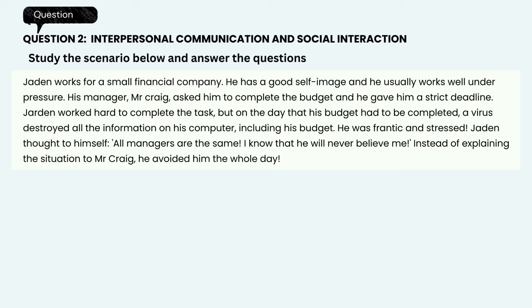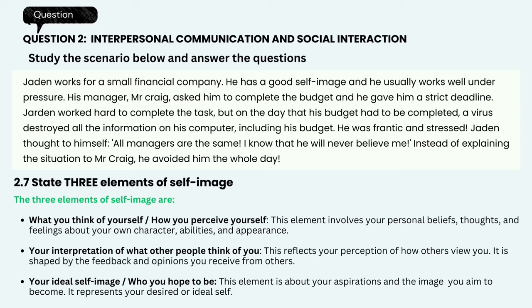State three elements of self-image. The three elements of self-image are: 1. What you think of yourself and how you perceive yourself — this element involves your personal beliefs, thoughts, and feelings about your own character, abilities, and appearance. 2. Your interpretation of what other people think of you — this reflects your perception of how others view you, shaped by the feedback and opinions you receive from others. 3. Your ideal self-image — who you hope to be — this element is about your aspirations and the image you aim to become, representing your desired or ideal self.